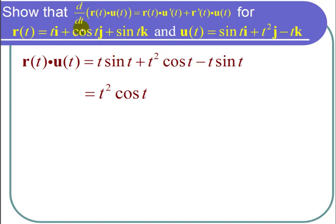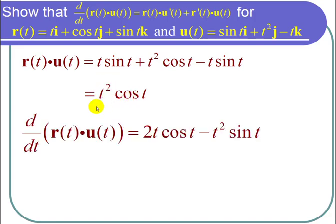I want the derivative of the dot product, so I use the product rule to find this derivative. I take the derivative of t squared, which is 2t, times the cosine of t, plus t squared times the derivative of cosine of t, which is minus the sine of t. So there's the left-hand side.